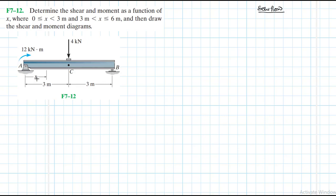We have a cantilever beam with a couple at A and a concentrated load at mid span. Let's draw the free body diagram. At A, where we have a hinge, we expect Ay and Ax. At B, where we have a roller, we expect just By.